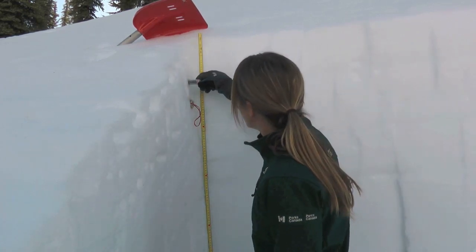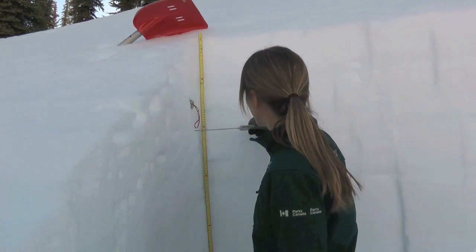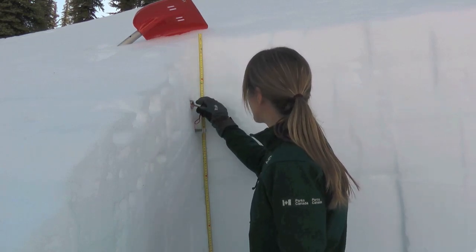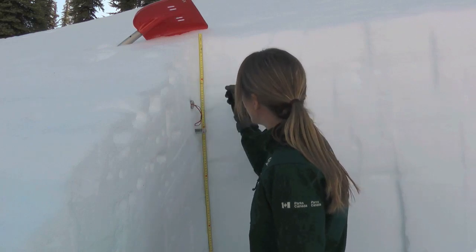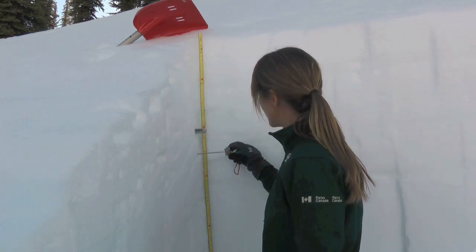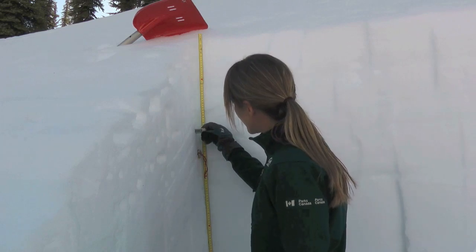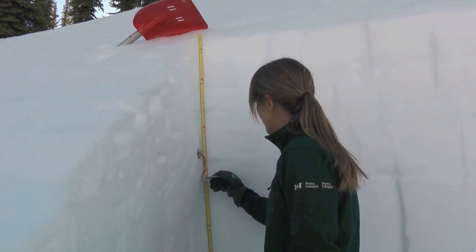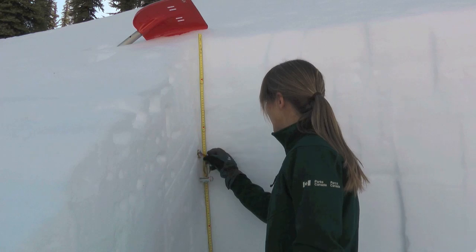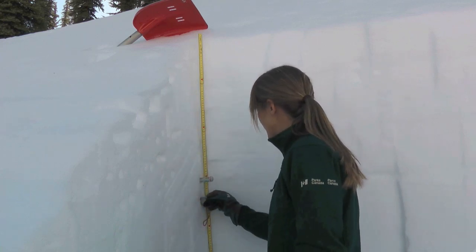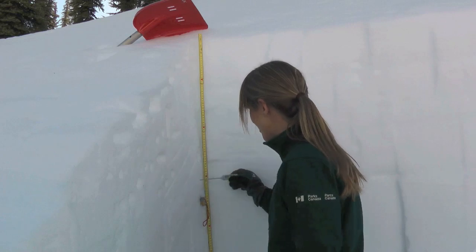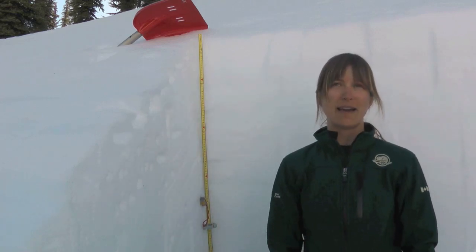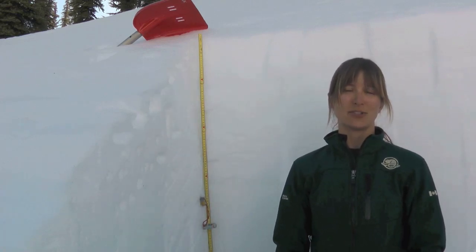We measure the temperature every 10 centimeters. At 20 cm it's minus 3; at 30 cm, minus 0.3; at 40 cm, minus 0.3; at 50 cm, minus 0.3; at 60 cm, minus 0.3. In this spring snowpack, there is not much change in the temperature. We've added circles to make it easier to see the different temperatures at different points in the snowpack.